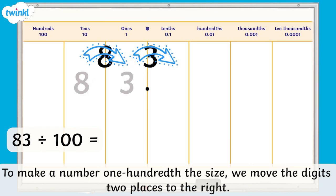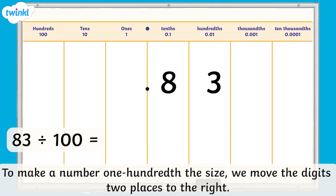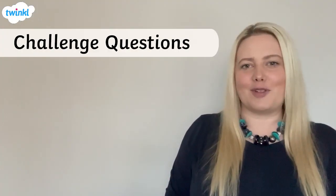You should have moved each digit two places to the right, making the number one hundredth the size. We now have eight tenths and three hundredths. We also need to remember our placeholder zero in the ones column. So, 83 divided by 100 equals 0.83. I think that you're ready for a challenge now.